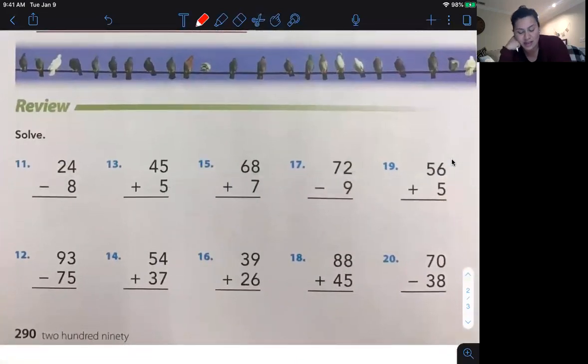All right, friends. Let's scroll down to the bottom. Okay. Let's look at these. They want us to solve these. Very simple. Very basic. Okay. Four take away eight. Can we do it? No, we can't. Let's regroup. Two becomes one. Four becomes fourteen. Fourteen take away eight. I'm going to count from eight to fourteen. Eight, nine, ten, eleven, twelve, thirteen, fourteen. That's six. Drop down the one. Sixteen. Very good.